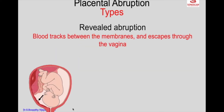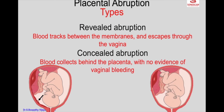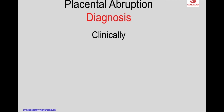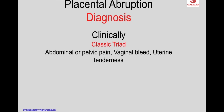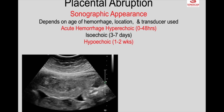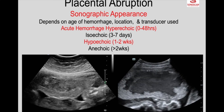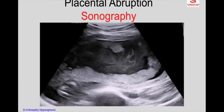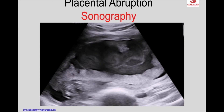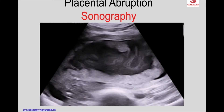This video shows concealed abruption, where blood collects behind the placenta with no evidence of vaginal bleeding. In this situation the complications are severe because there is no visible bleeding. Diagnosis of placental abruption is clinically done because of the classic triad: abdominal or pelvic pain, vaginal bleed, and uterine tenderness. The hematoma will become anechoic after about 2 weeks, almost mimicking fluid, and in real time you may see movement. That is the appearance over time in a case of retroplacental clot.